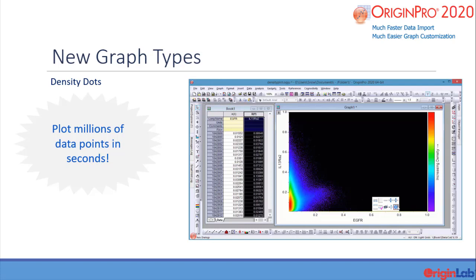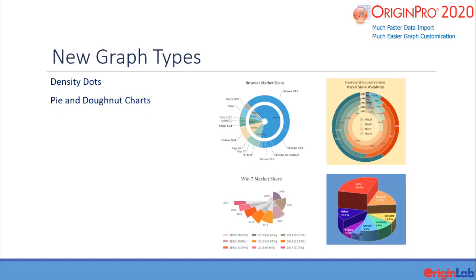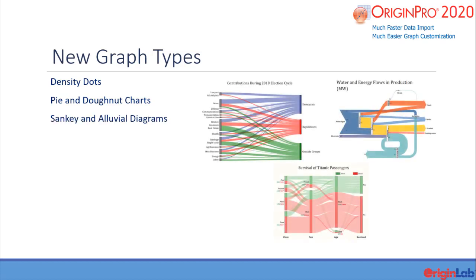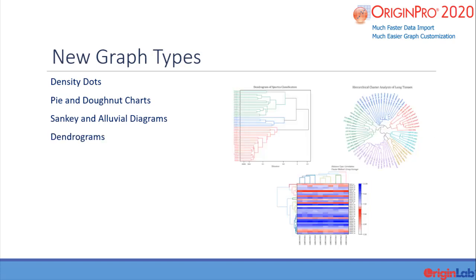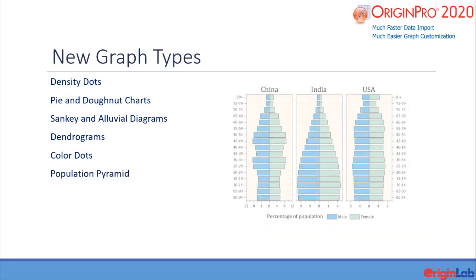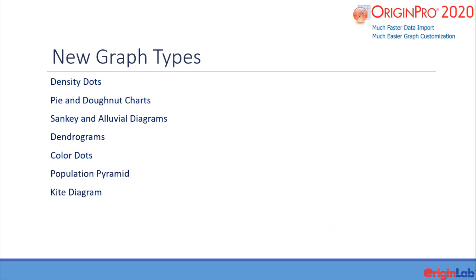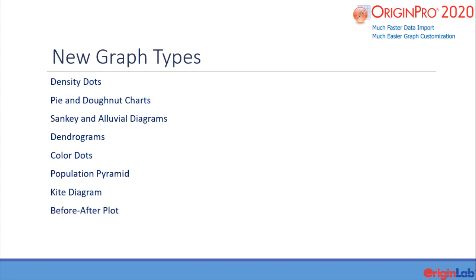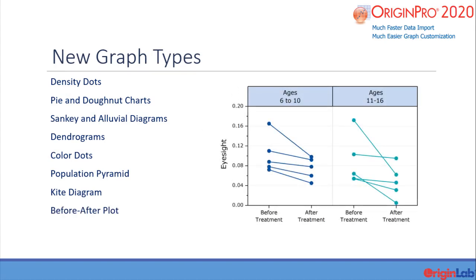Additional new graph types include improved pie and donut charts with new variations, Sankey and alluvial diagrams, new dendrogram plot options, color dots, population pyramid, kite diagram, and before-after plots.